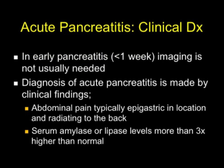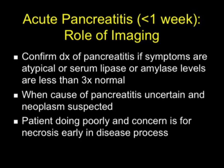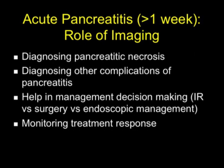When looking at clinical diagnosis, usually imaging is not necessary. The diagnosis of acute pancreatitis can be made by clinical findings — typically epigastric abdominal pain radiating to the back — and serum amylase or lipase levels three times higher than normal. We do imaging when we're uncertain if the patient has pancreatitis, if lipase or amylase levels are not that high, when looking for a cause such as an underlying neoplasm, or when the patient is doing poorly and we're concerned about early necrosis. Most of the time when using CT, it's after one week, when we're worried about pancreatic necrosis, pseudoaneurysms, and other complications, or using CT to guide management decisions and monitor treatment response.